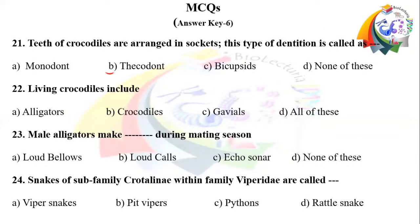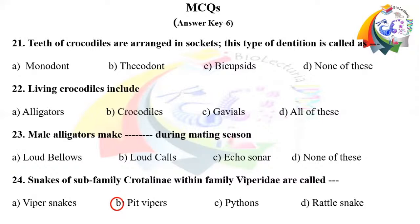Answers: Question 21 right option B — thecodont; teeth of crocodiles are arranged in sockets and this type of dentition is called thecodont. Question 22 right option D — living crocodiles include alligators, crocodiles, and gavials. Question 23 right option A — male alligators make loud bellows during mating season. Question 24 right option B — snakes of subfamily Crotalinae within family Viperidae are called pit vipers.